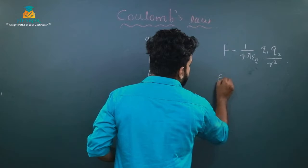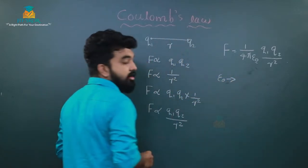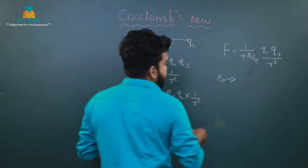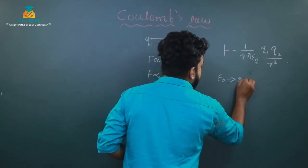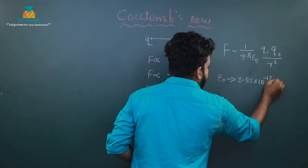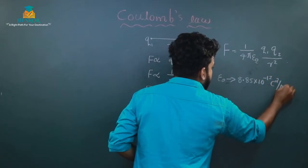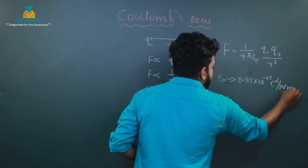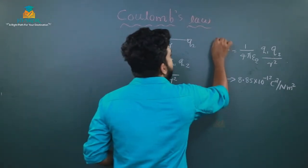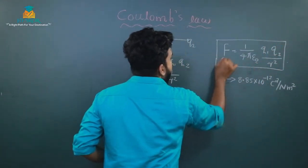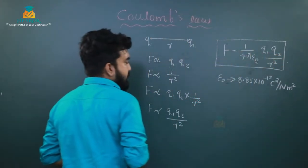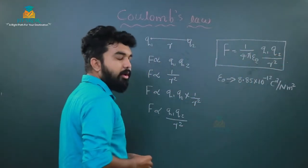What is epsilon 0? Epsilon 0 is the permittivity of free space. Its value is 8.85 into 10 raised to minus 12 coulomb square per newton meter square. This gives the equation for Coulomb's Law: F equals 1 by 4 pi epsilon 0 into q1 q2 divided by r square.